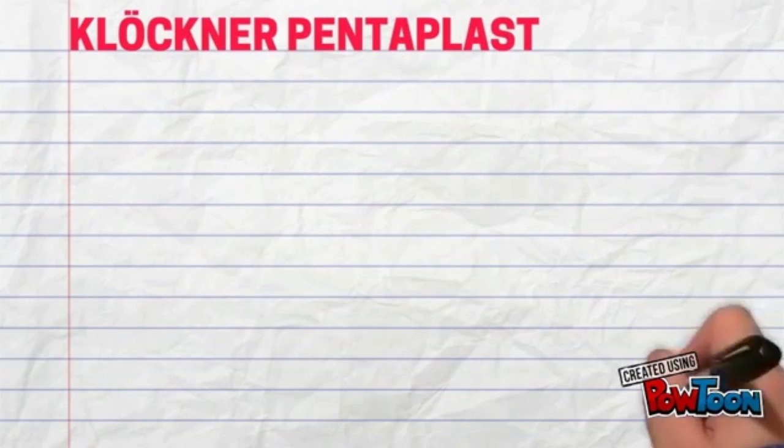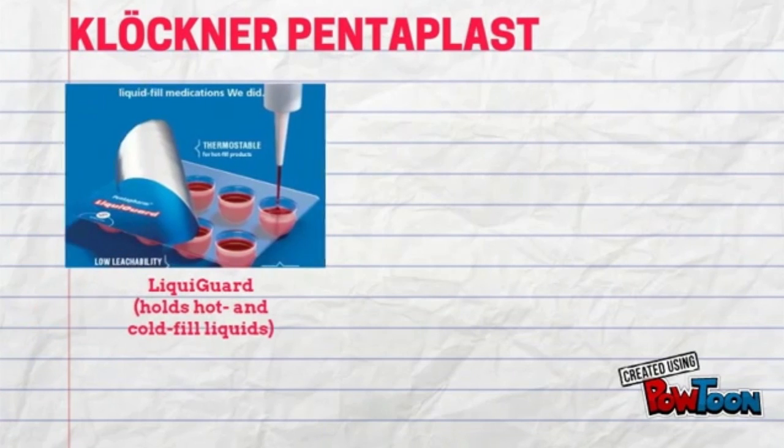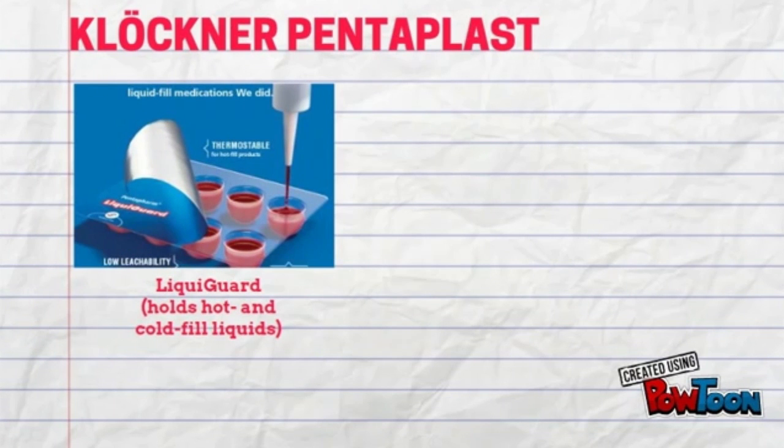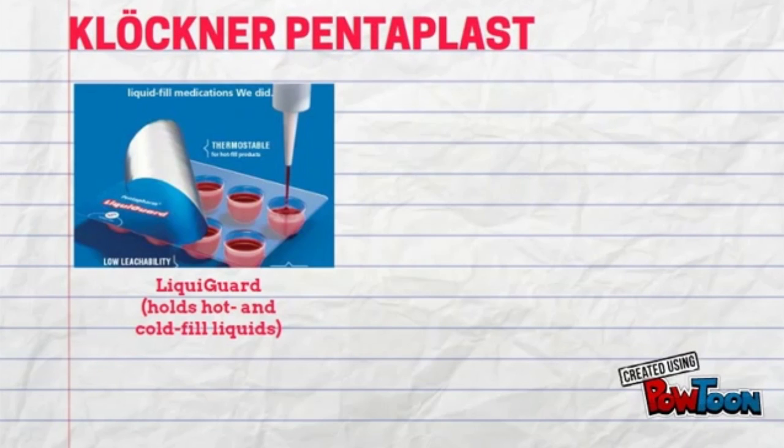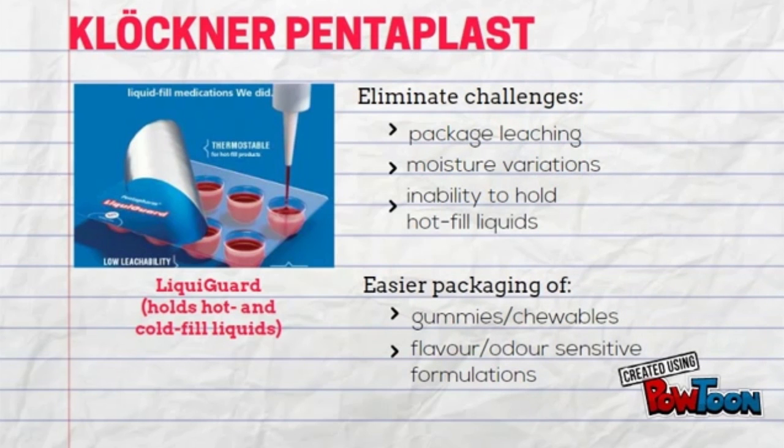Clochner Plantapast is a major supplier of pharmaceuticals and packaging. They created the Liquigard, which is a blister film with the ability to hold hot and cold fill liquids. They are innovative because they eliminate many challenges in blister packaging, as listed below, and make packaging easier for variations of vitamins.